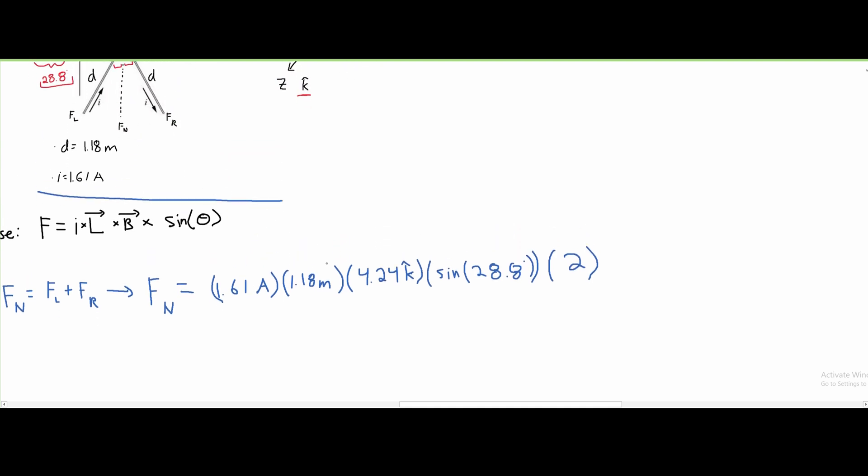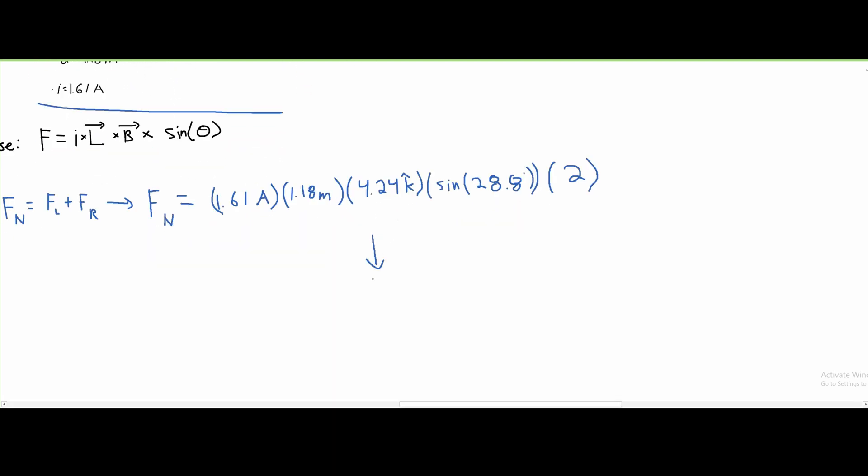If they were different, we would have to add them separately. After we plug everything into our calculator carefully in degrees, we get f_net equals 7.76 newtons.